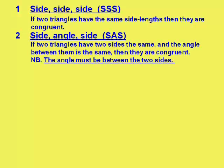Side, angle, side. If two triangles have two sides the same and the angle between them the same, then they're congruent. It's important, though, that the angle is between the two sides.